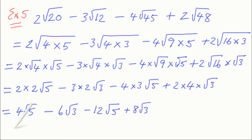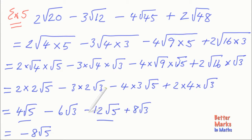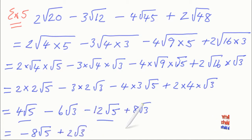Now collecting like surds: 4 root 5 minus 12 root 5 equals minus 8 root 5. Remember — it's always the sign directly in front of a term that tells you what to do with it. Then minus 6 root 3 plus 8 root 3 equals plus 2 root 3. So the final answer is minus 8 root 5 plus 2 root 3.